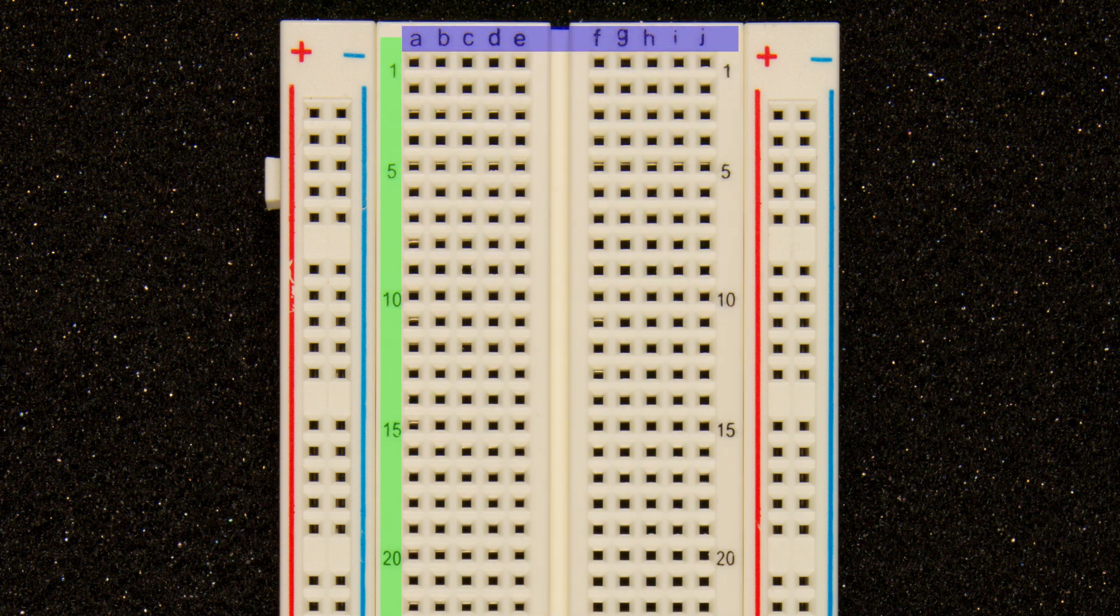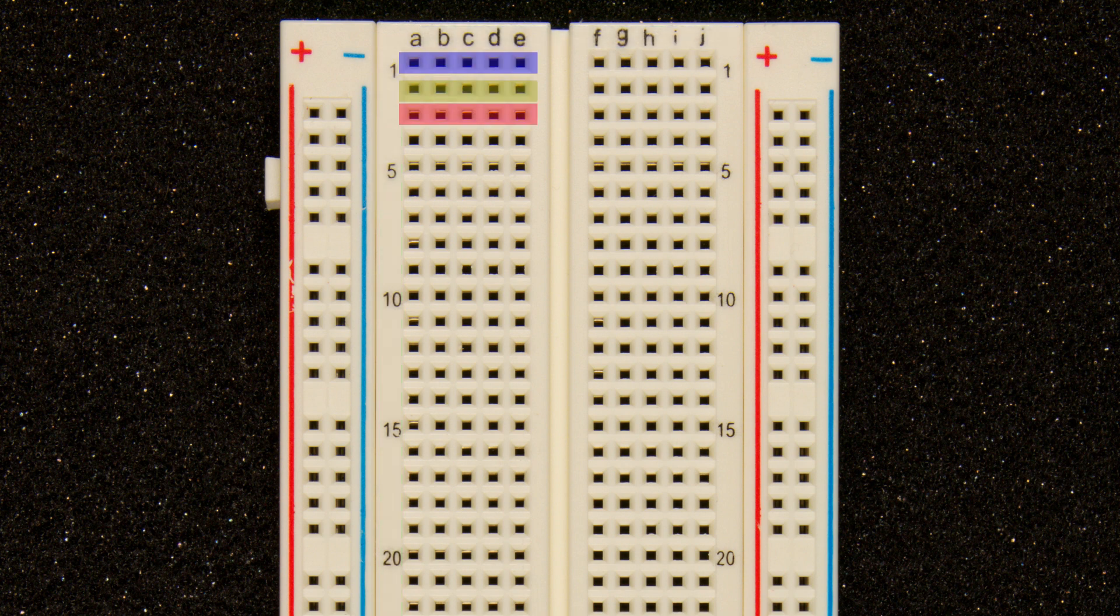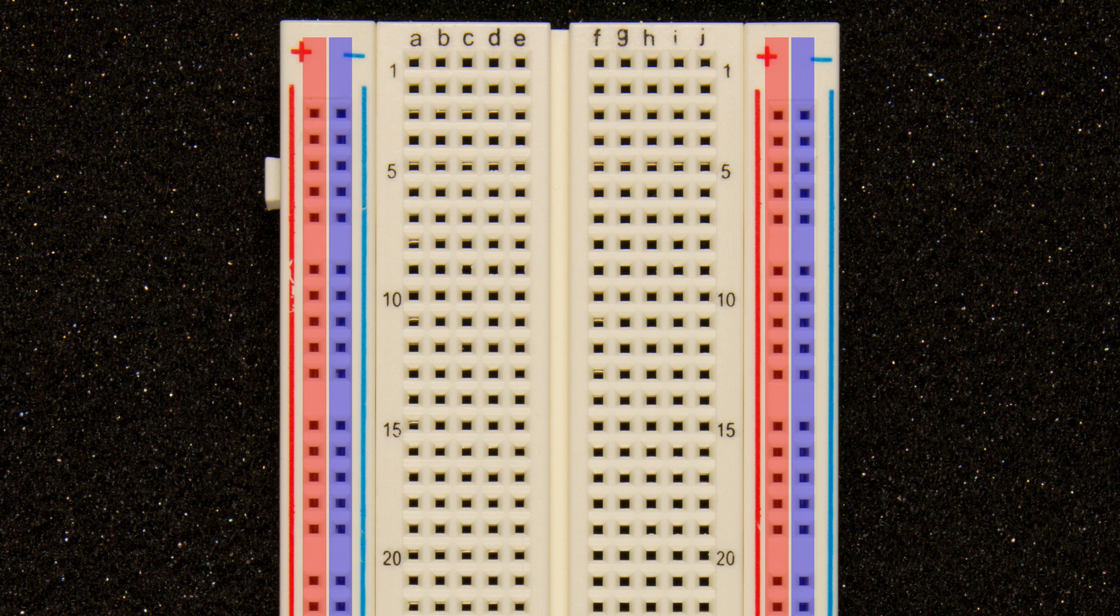The breadboard is divided into many rows and columns. Each pin electronically connects to other pins in that row. Likewise, all the power supply rails are connected together as well.